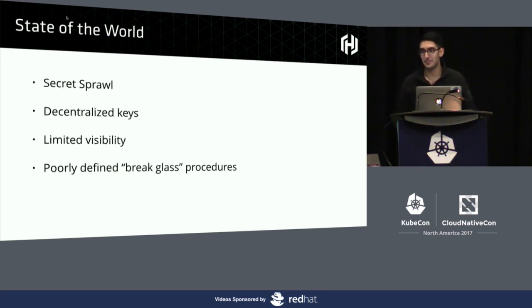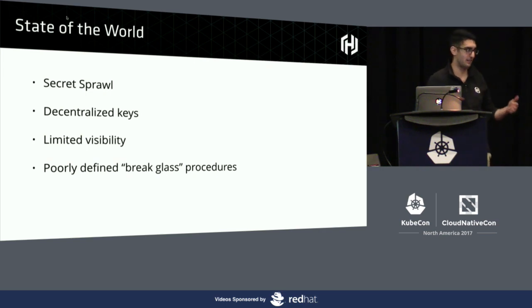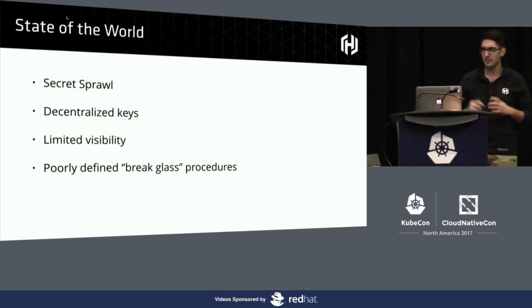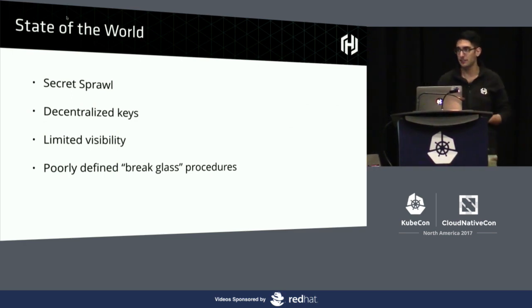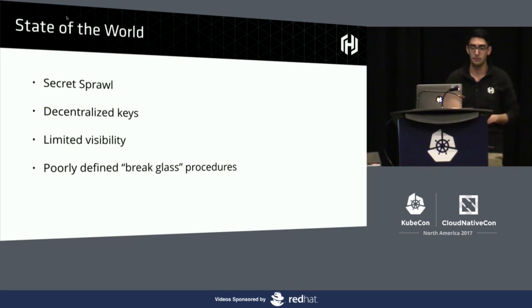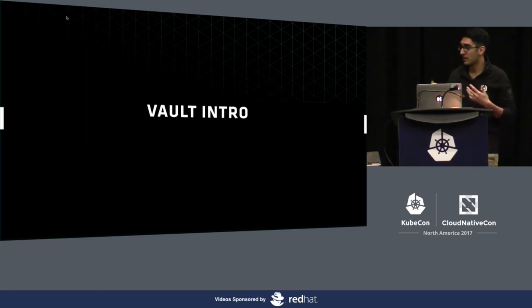The standard state of the world — the answer we typically see to many of these questions — is not great. It's what we would define as secret sprawl. These secrets are defined everywhere: hard-coded in an application, living in plain text in a config file, strewn about GitHub or Puppet servers. As a result, there's extreme decentralization, which means relatively limited visibility into who's doing what, when, and where. And in the case of a compromise, we have minimal, if any, procedures around how to do break-glass recovery. This was really the problem space we started thinking about when we started working on Vault.